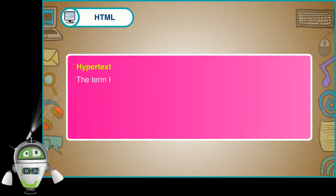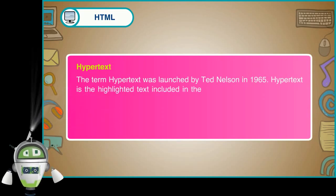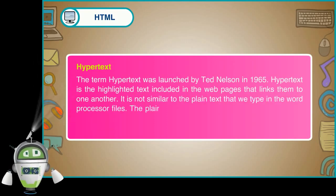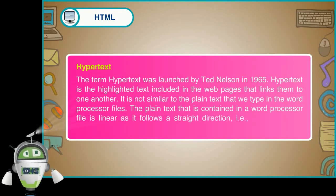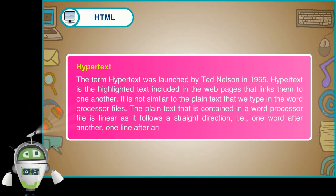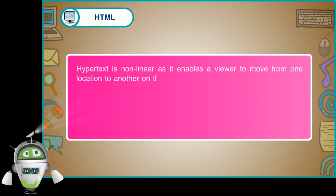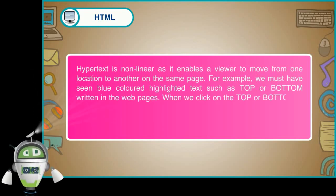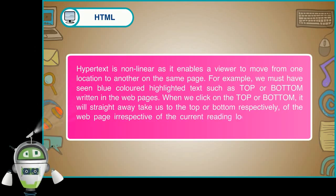Hypertext: The term hypertext was launched by Ted Nelson in 1965. Hypertext is the highlighted text included in web pages that links them to one another. It is not similar to the plain text that we type in word processor files. The plain text contained in a word processor file is linear as it follows a straight direction — one word after another, one line after another, and so on. Hypertext is non-linear as it enables a viewer to move from one location to another on the same page. For example, we must have seen blue-coloured highlighted text such as 'top' or 'bottom' written in web pages. When we click on 'top' or 'bottom', it will straightaway take us to the top or bottom respectively of the web page, irrespective of the current reading location.